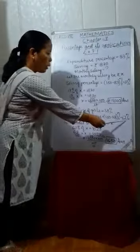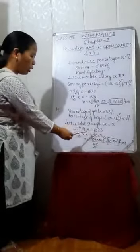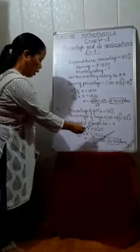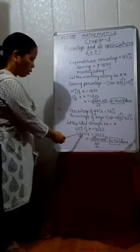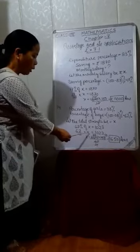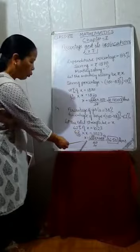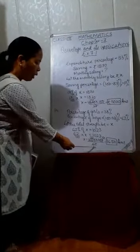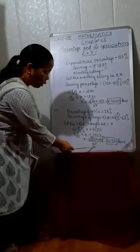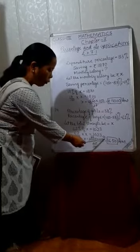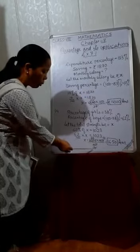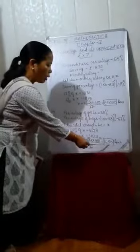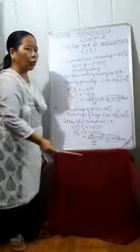We know that the percentage of boys is 62% and the number of boys is already given. So 62% of total strength X equals 1023. That gives us 62 upon 100 multiplied by X equals 1023, so X equals 1023 multiplied by 100 divided by 62. Cancelling by 2, and then dividing 1023 by 31 we get 33, and 33 multiplied by 50 equals 1650. So 1650 is the total strength of the school.